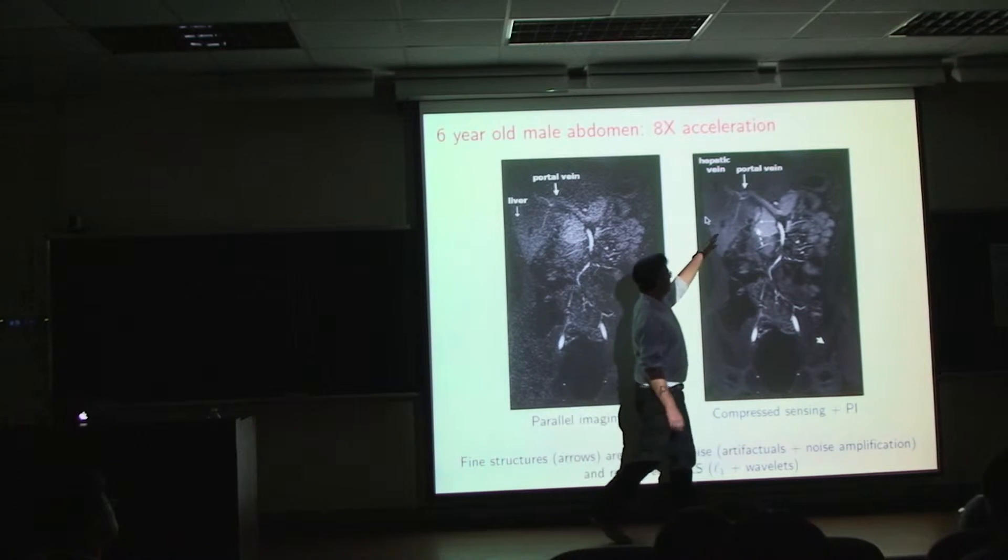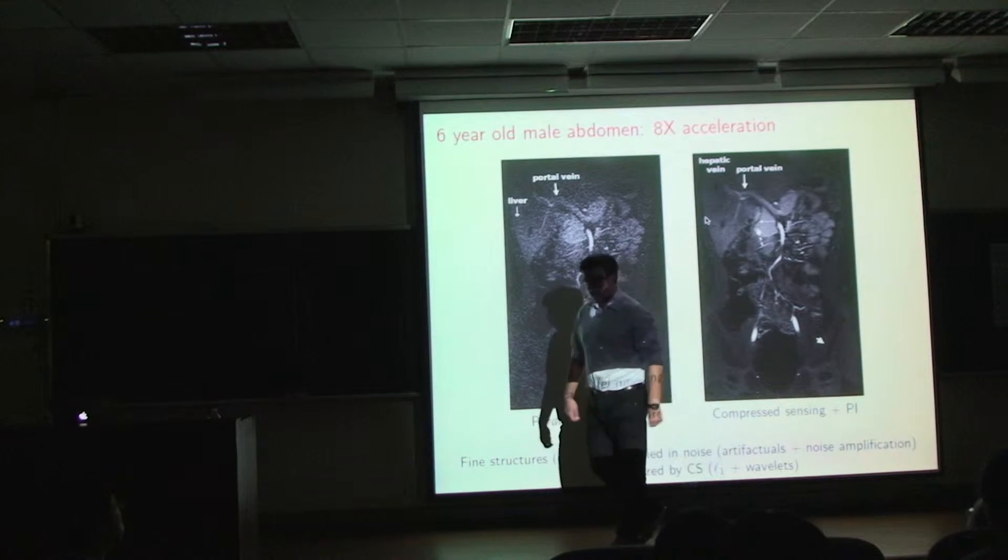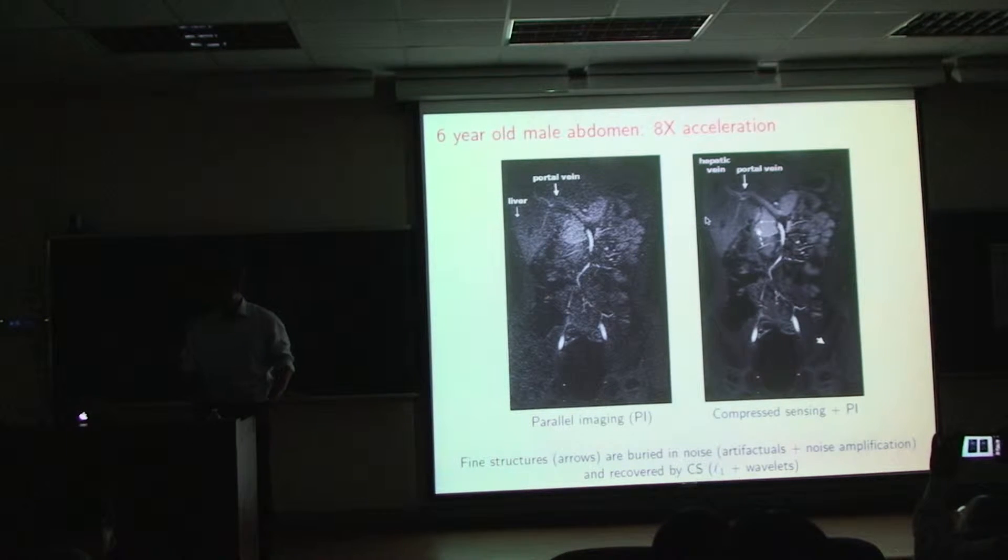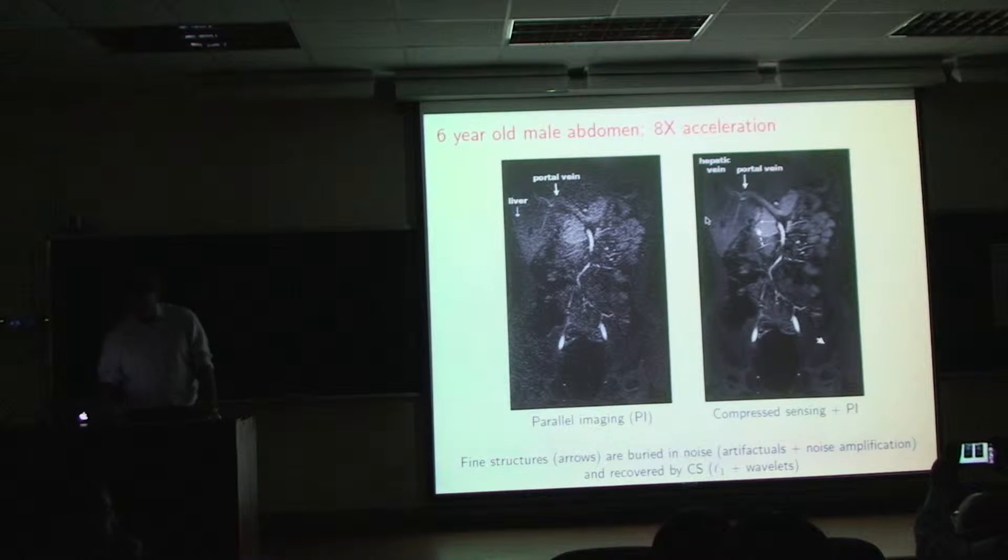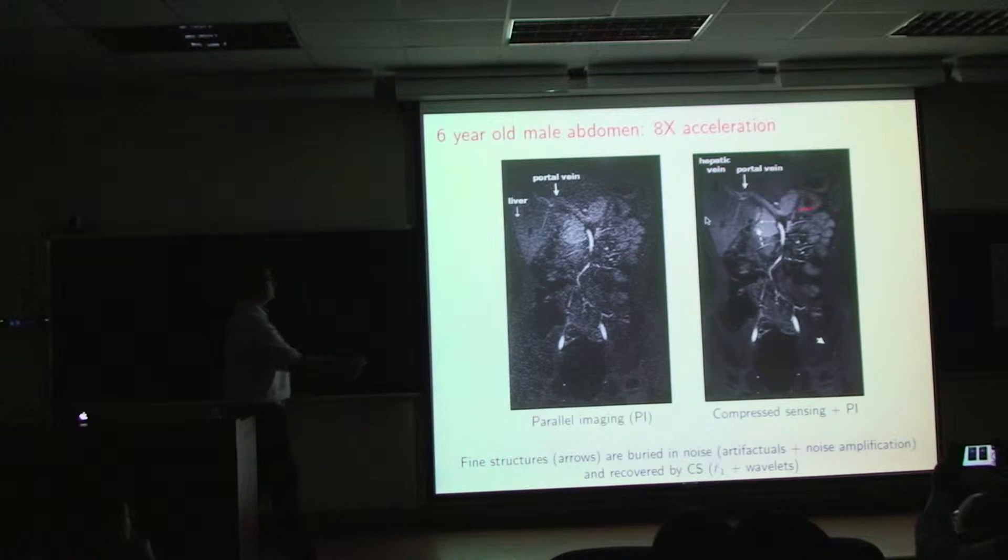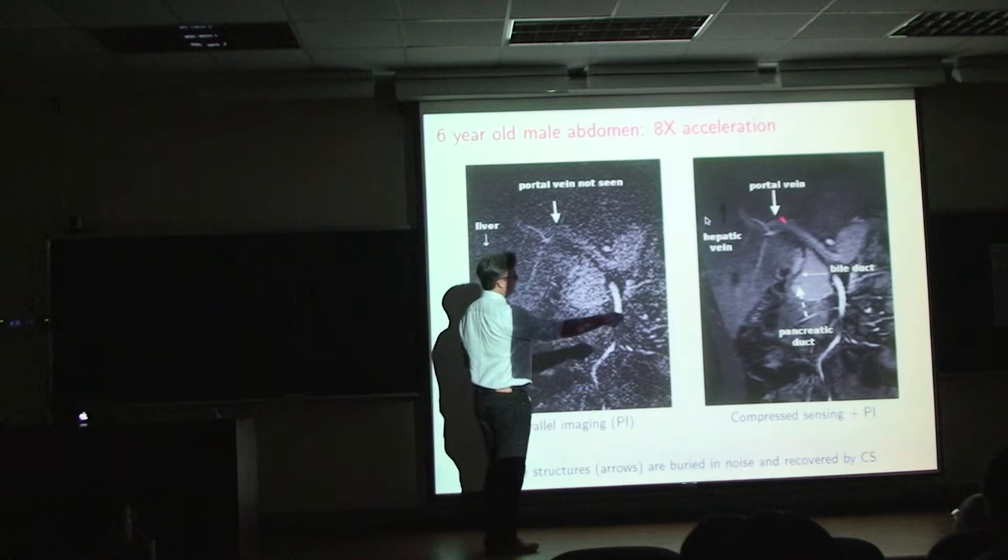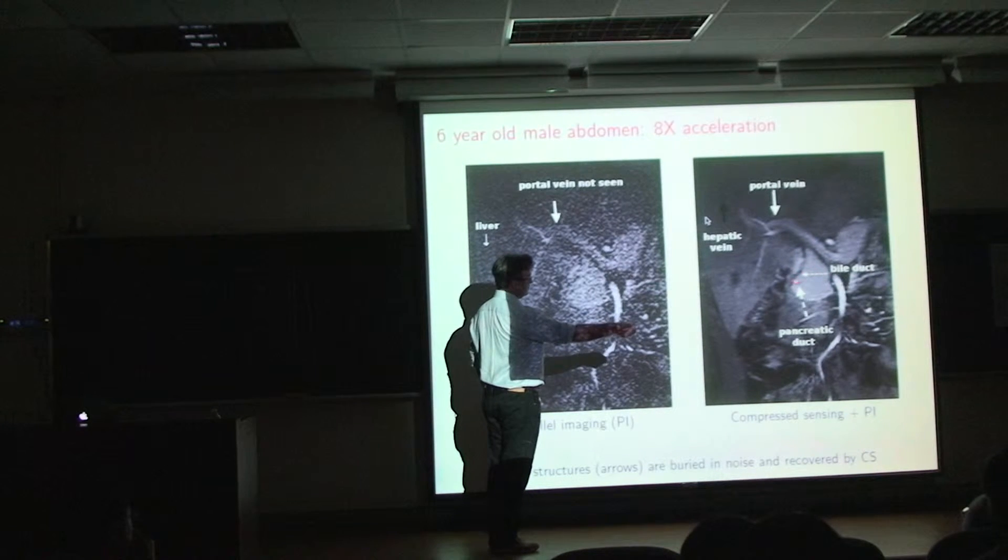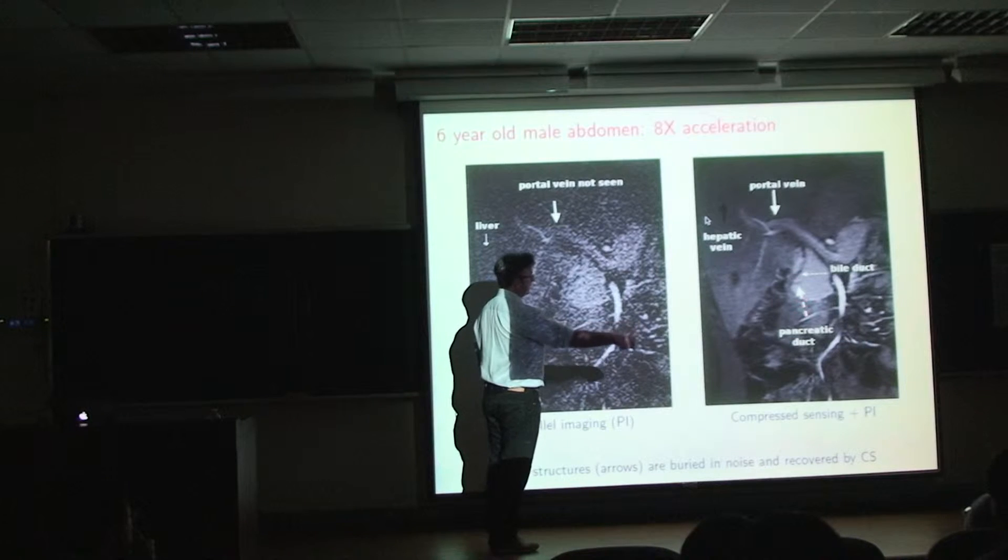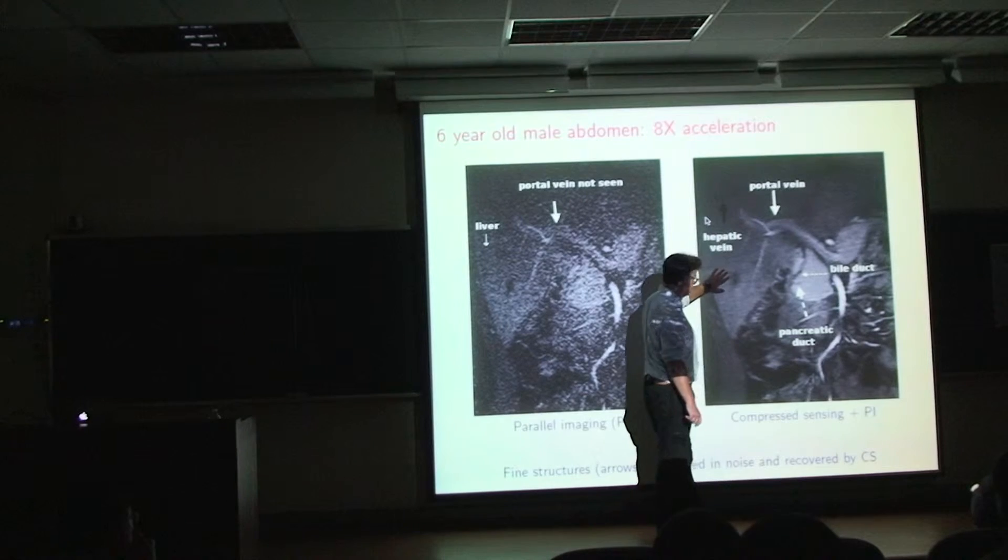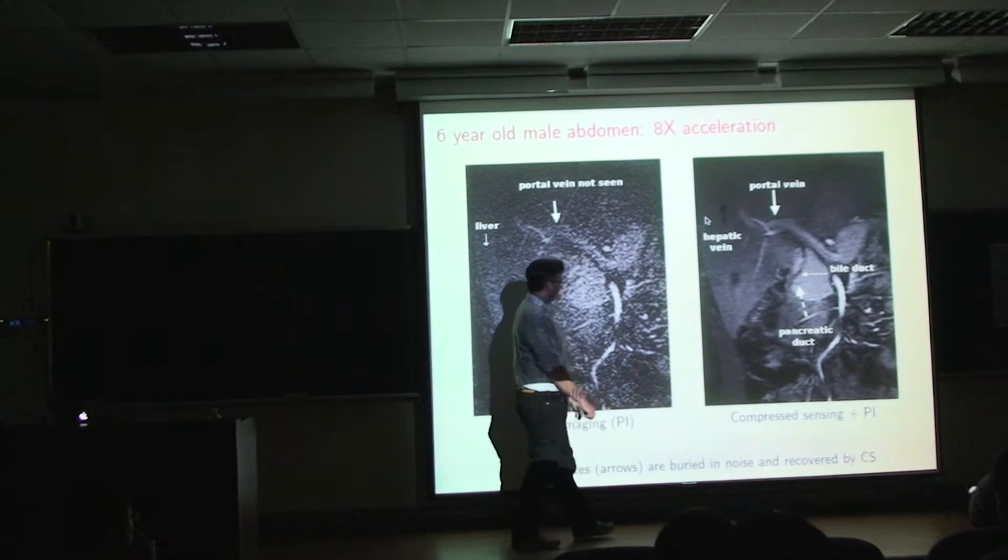We have the portal vein, and what doctors are looking for, at least in the case of this two-year-old boy brought to Stanford in an emergency, is to see whether any of these conducts are obstructed. In a compressed sensing scenario, you can see much harder detail. Here's a blow-up showing the portal vein, the bile duct right here, and you're looking for obstruction in the common duct. You see all these veins, and doctors seem to prefer images like this.